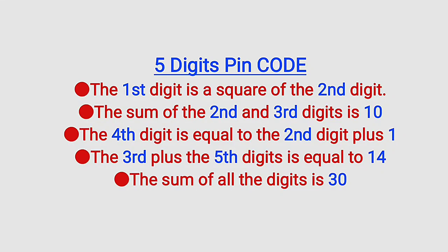Hello, dear viewers. In this tutorial we are going to find a solution to a five-digit PIN code puzzle posted on Facebook. The five statements are: the first digit is a square of the second digit; the sum of the second and third digits equals 10; the fourth digit equals the second digit plus 1; the third plus the fifth digits equals 14; and the sum of all five digits equals 30.